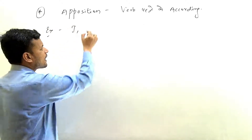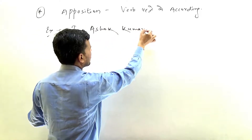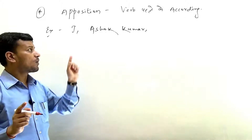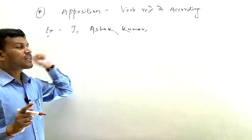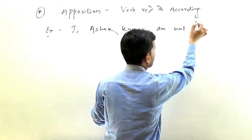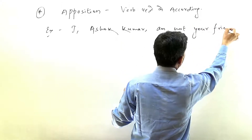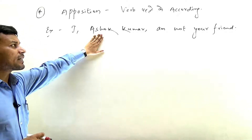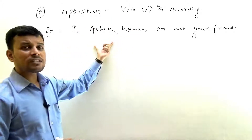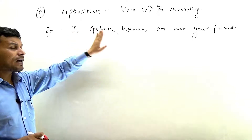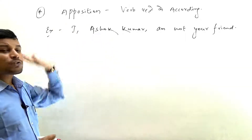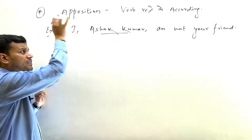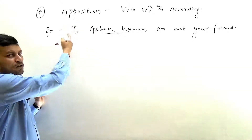For example: 'I, Ashok Kumar, am not your friend.' Here 'Ashok Kumar' is in apposition to 'I' — meaning Ashok Kumar is speaking about himself. The verb 'am' agrees with 'I,' not with 'Ashok Kumar.' So we don't say 'I, Ashok Kumar, is not your friend' — that is wrong. The noun in apposition technically is not the subject; the verb always agrees with the element before the apposition.